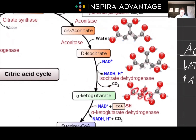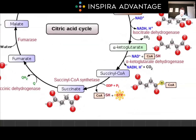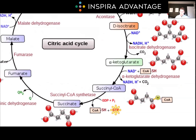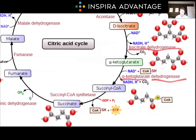Notice we've lost a CO2, which means a carbon is gone — now we have five carbons in alpha-ketoglutarate. From alpha-ketoglutarate, we again make another NADH as we go to succinyl-CoA, leaving us with four carbons. I want to draw your attention to a naming convention: isocitrate dehydrogenase, alpha-ketoglutarate dehydrogenase — most of these dehydrogenase enzymes are producing NADH. That's a nice giveaway on the MCAT when it asks what a dehydrogenase enzyme does — it's probably making NADH or FADH2.